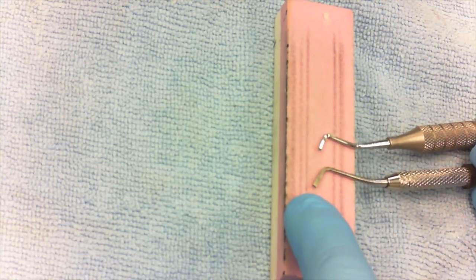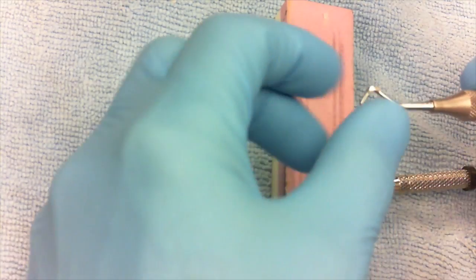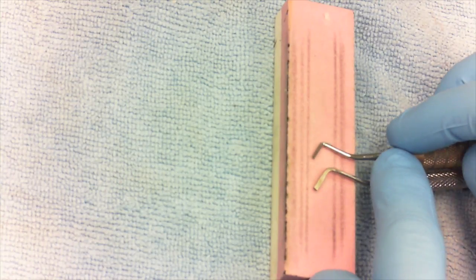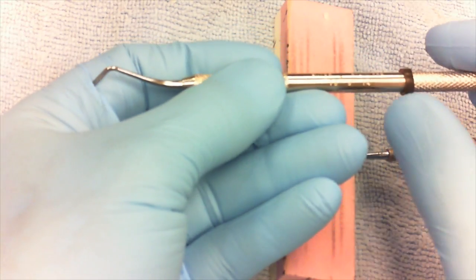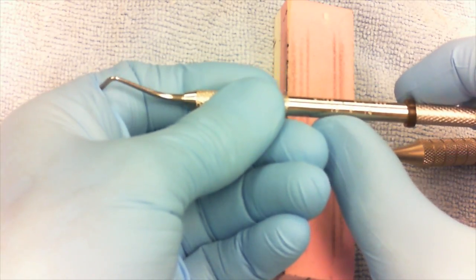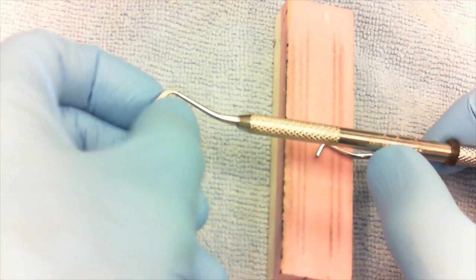So this instrument here is 15, which means 1.5 millimeters, and this instrument over here is 10, which means 1.0 millimeters. Take a moment to find the measurement on the instrument itself by holding it up and seeing there is in fact a 15 here as the first number on the instrument. That goes for all hand instruments.